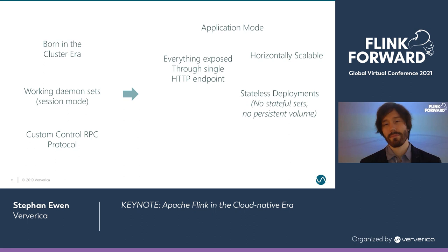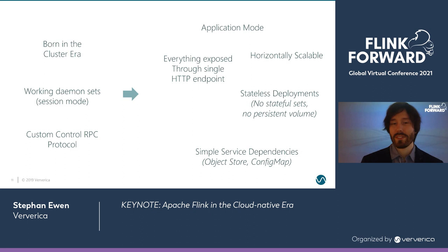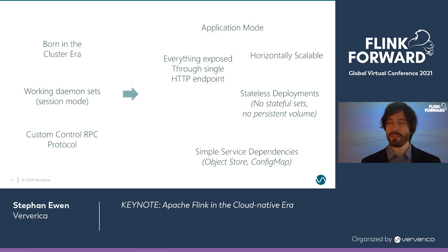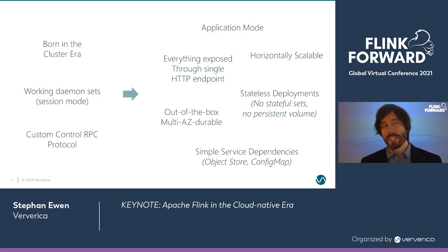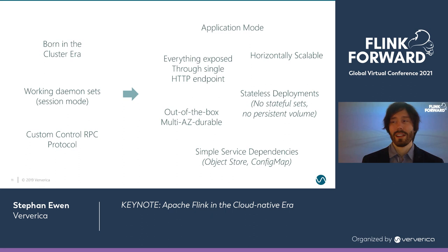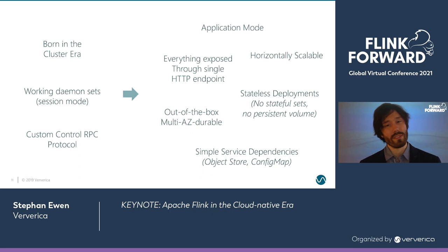The dependencies that Flink has are very simple. The strongest dependency is on an object store or distributed file system for snapshotting state. Other than that, it's really something as simple as a config map if you're deploying in Kubernetes. On most cloud providers, you actually get durability across availability zones out of the box because object stores are durable for a region, not just a single data center. You get availability zone failover without paying for additional traffic or extra effort to make data durable.